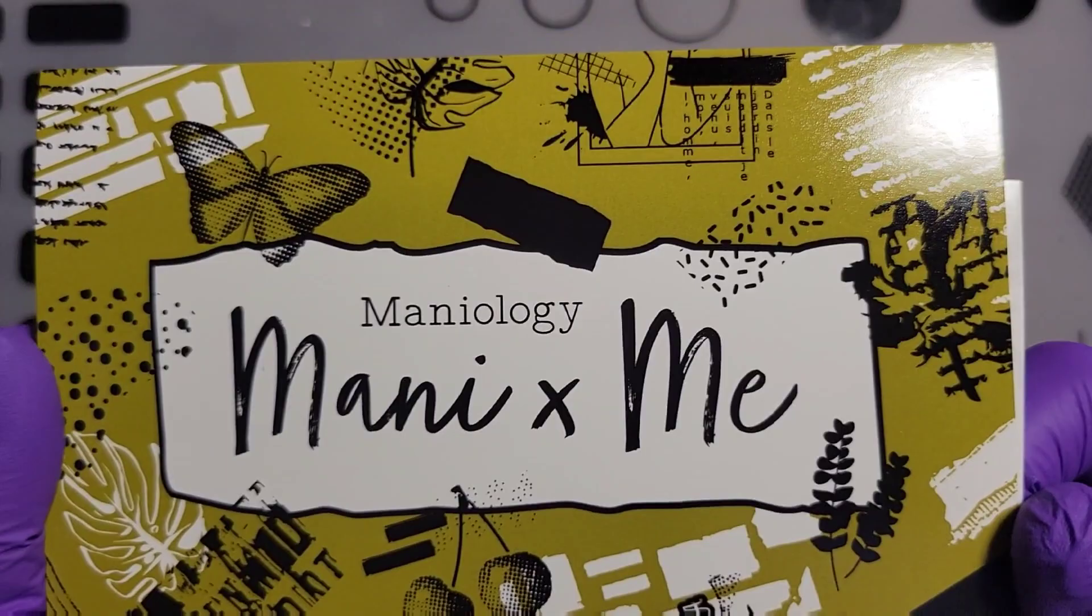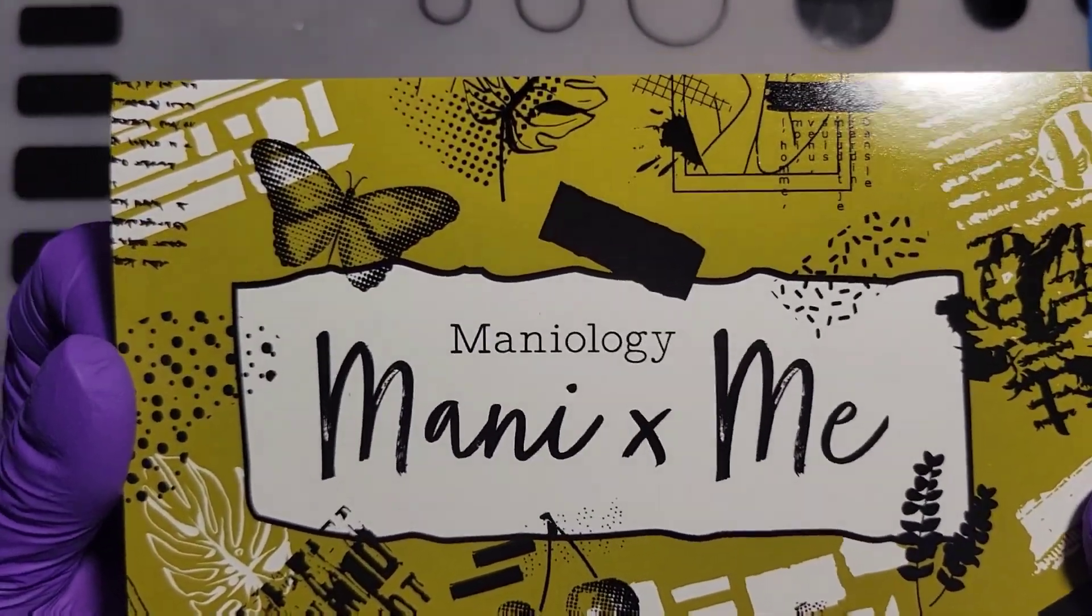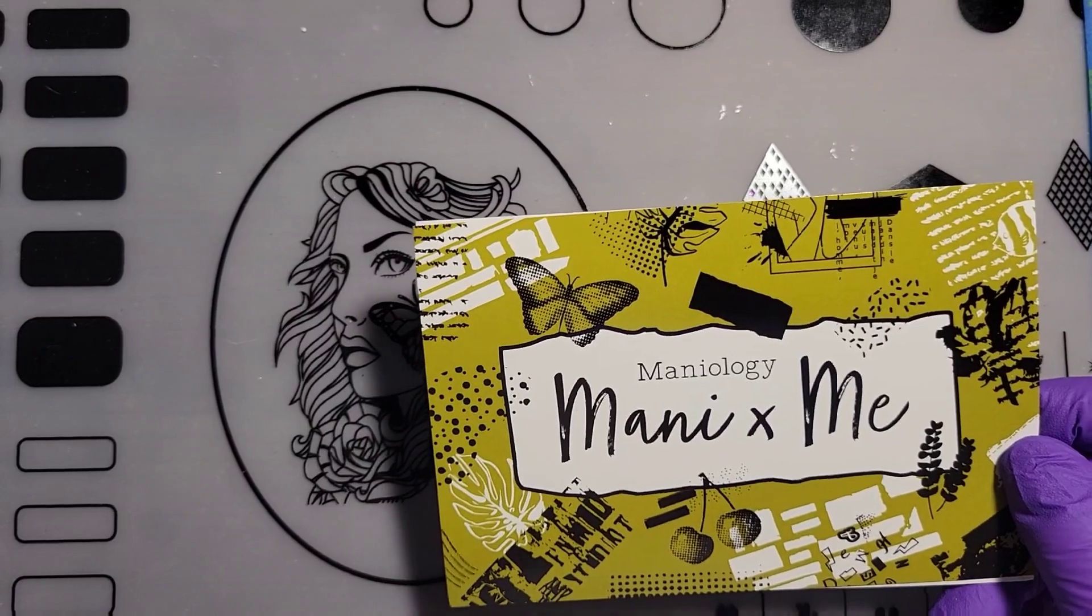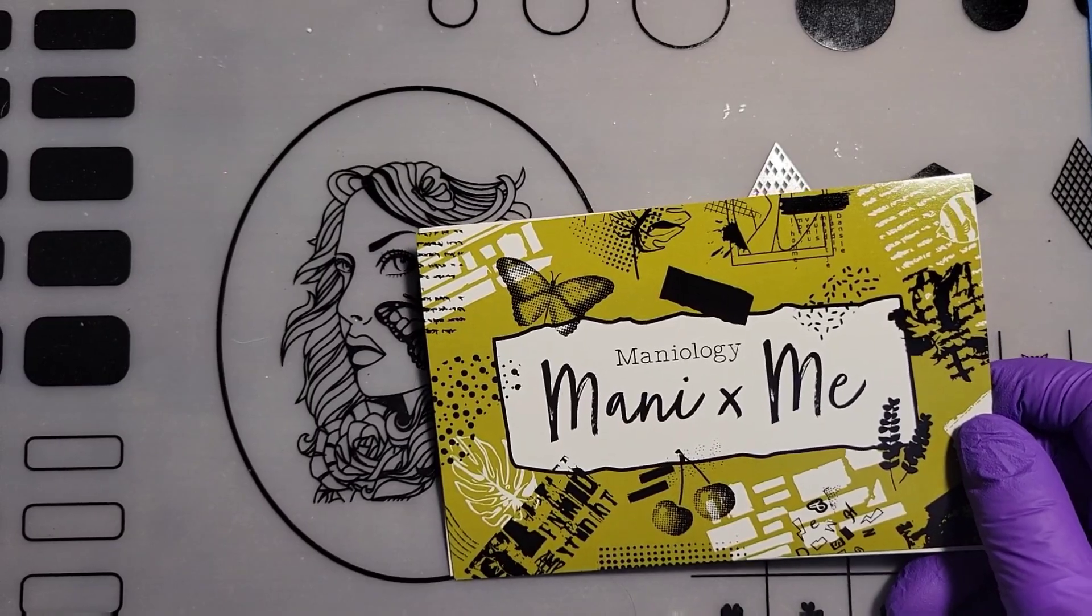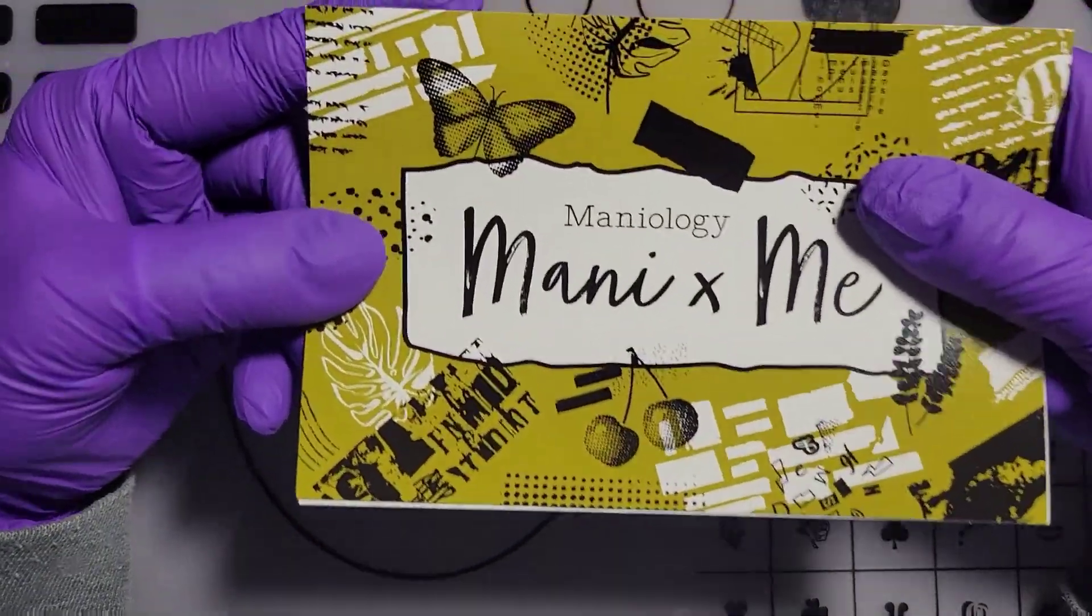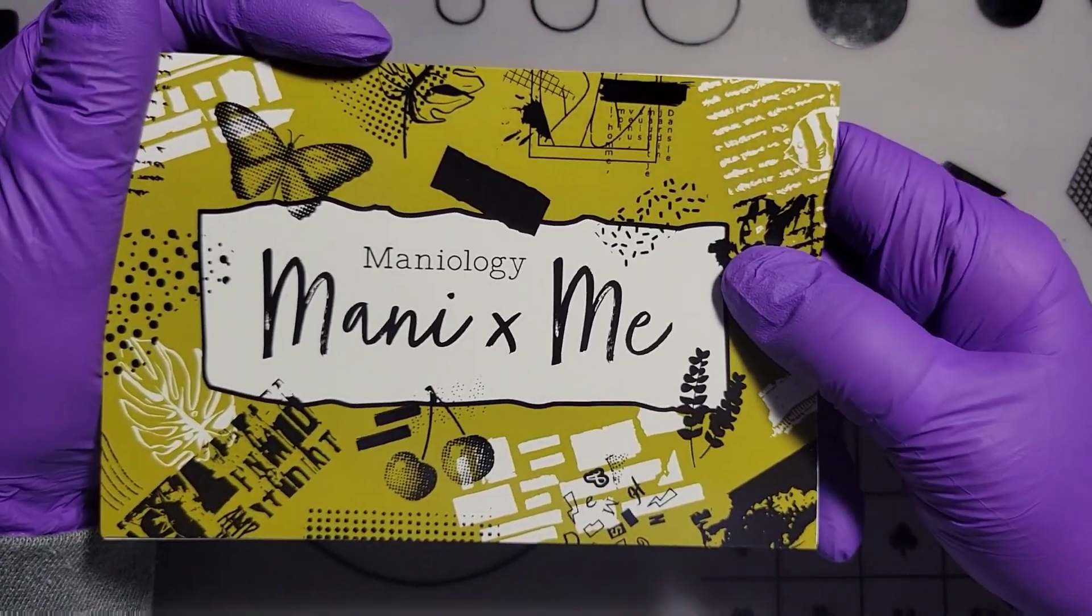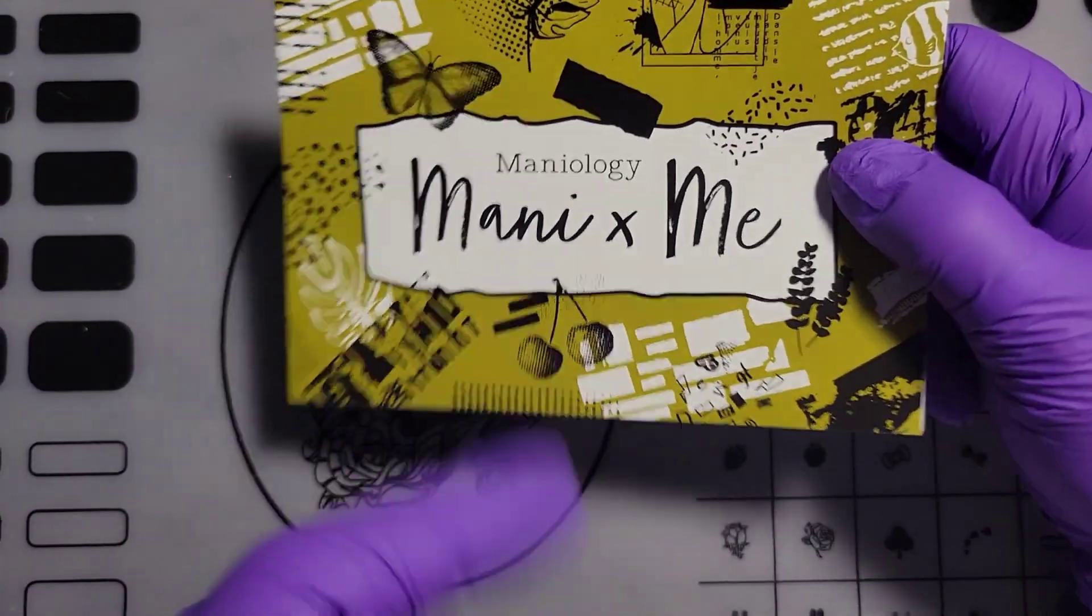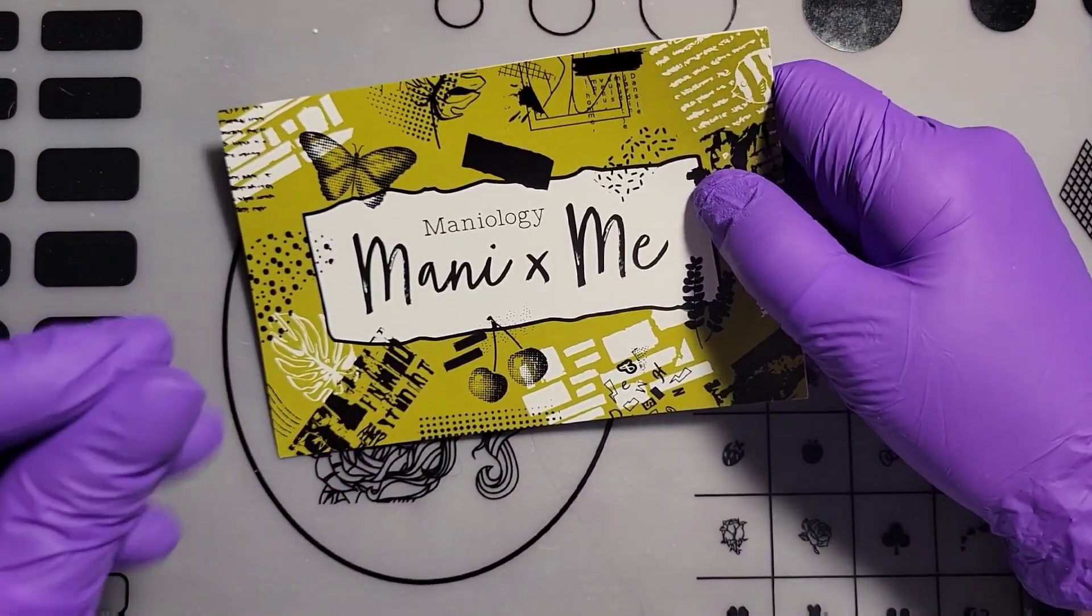What is up you guys, welcome back to my channel. Today's episode is the February Mani and Me. The reason I haven't filmed this, I did get this earlier, is because the polishes were frozen solid when I got them. I've learned living here in frozen tundra Denver that I can't touch those polishes for at least three days, sometimes four days, just to bring them to room temperature.